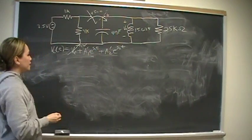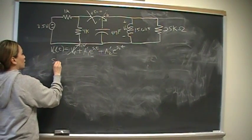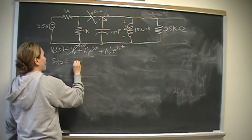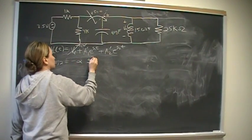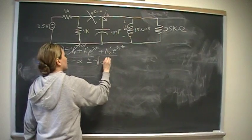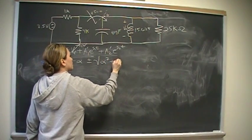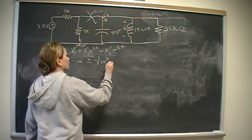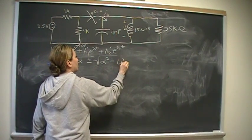S1 and S2 are pretty easy also. S1, 2 is going to equal negative alpha plus or minus root alpha squared minus omega naught squared.